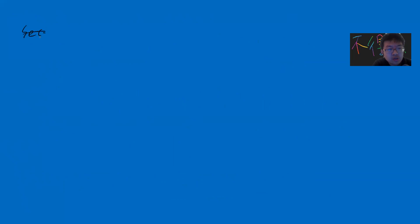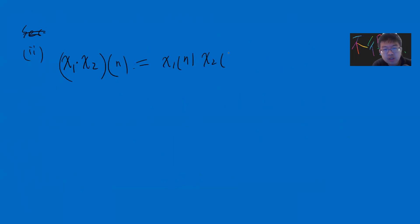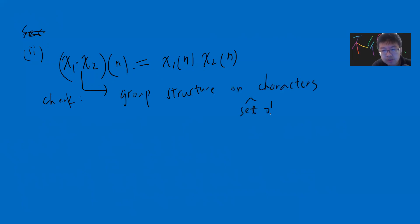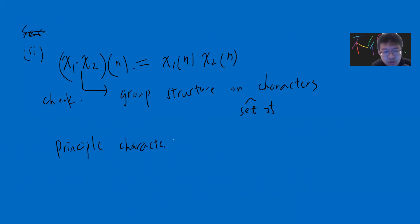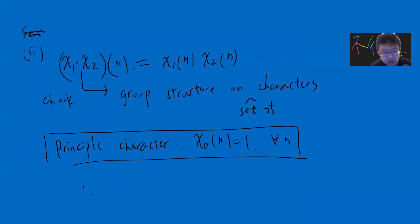The second result: you can define a product of characters (χ₁ · χ₂)(n) = χ₁(n)χ₂(n), and the set of characters forms a group. The principal character χ₀ (where χ₀(n) = 1 for all n coprime to q) is the identity element. The inverse of χ is its complex conjugate: χ⁻¹(n) = χ̄(n).